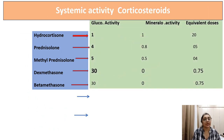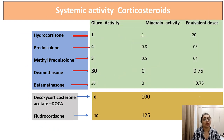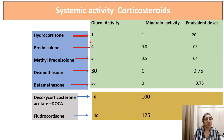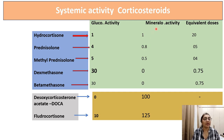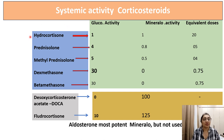Regarding systemic activity, hydrocortisone has a glucocorticoid activity of 1. Glucocorticoid activity refers to the anti-inflammatory and immunosuppressant activity of corticosteroids. Hydrocortisone has a mineralocorticoid activity of 1, meaning its water and salt retention activity is 1, and its dose is 20 mg. Taking hydrocortisone as the standard drug, we can compare other drugs to it.